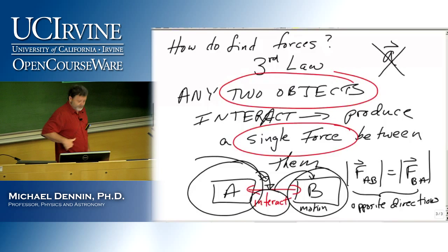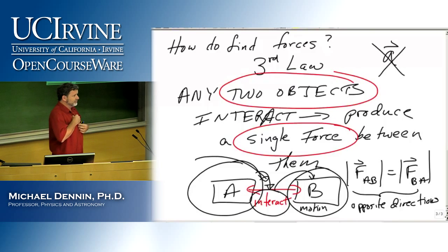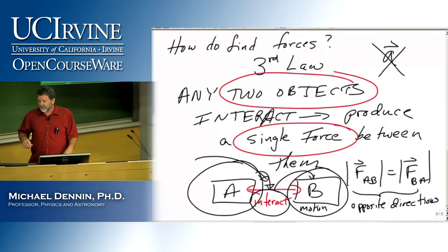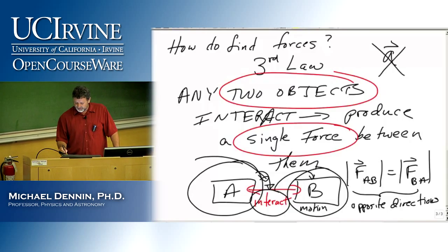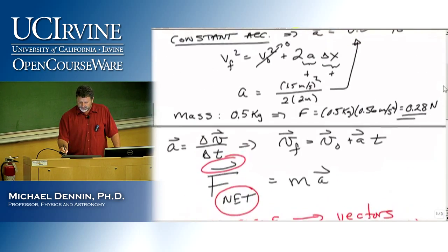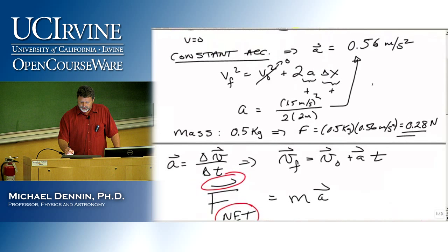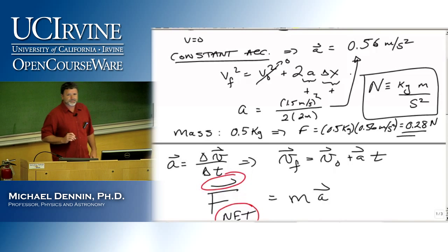How do you get the units when you're meant to find a kilogram? That's just a definition. A Newton is defined to be a kilogram times a meter divided by a second squared. That's just a definition.